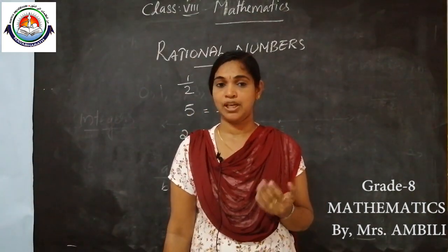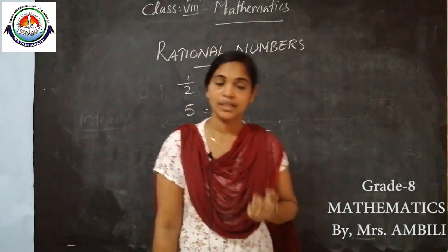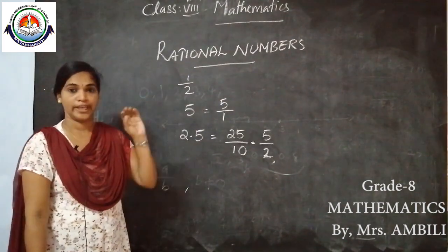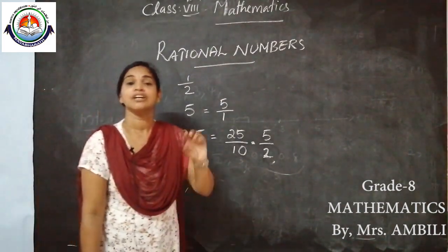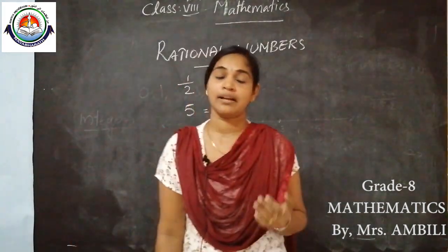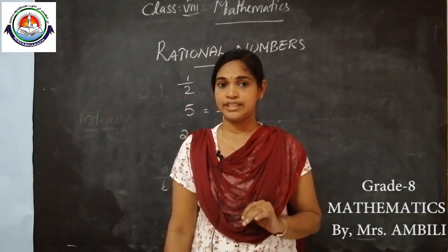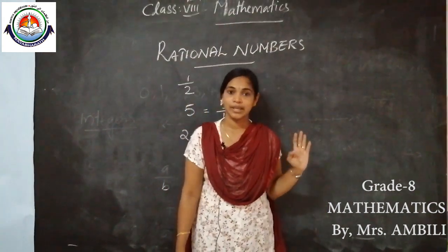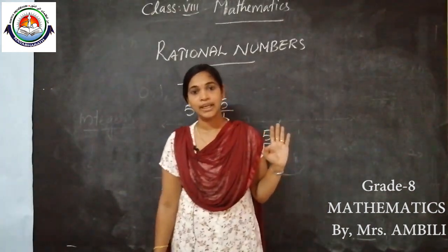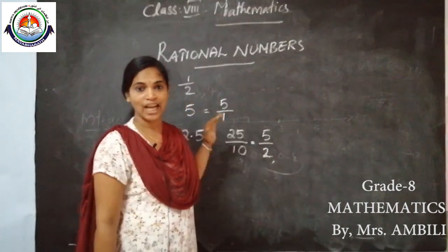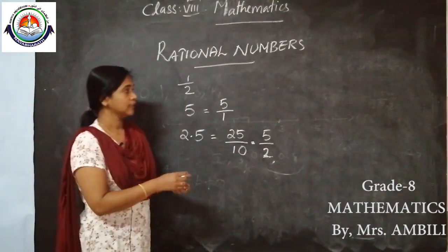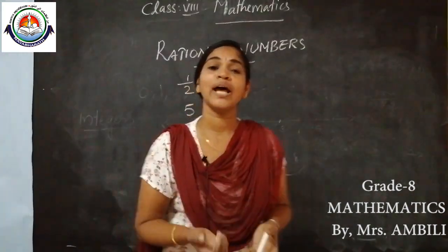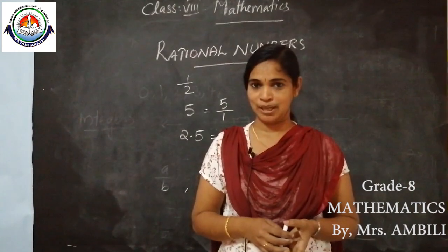So what is a rational number? A number that can be expressed in the form of A by B where A and B are any two integers and B is not equal to 0. Now, understood about rational numbers. So our next topic: equivalent rational numbers.